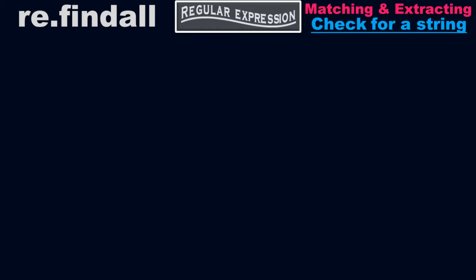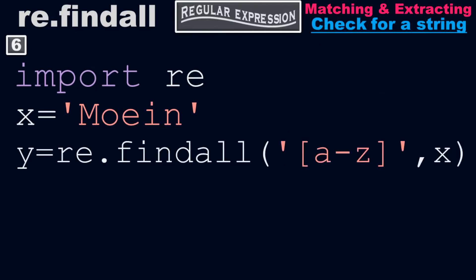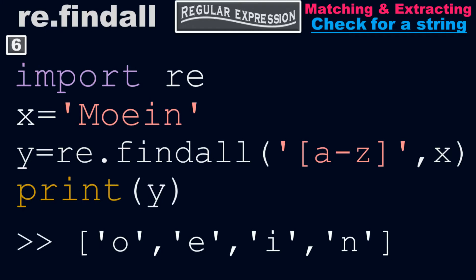Example number six. First, import the regular expression library. Then x equals 'moin', and then y equals re.findall of [a-z] comma x. Take the print of y — it will return the output: o, e, i, n. We are checking for a string, doing matching and extracting using a regular expression.